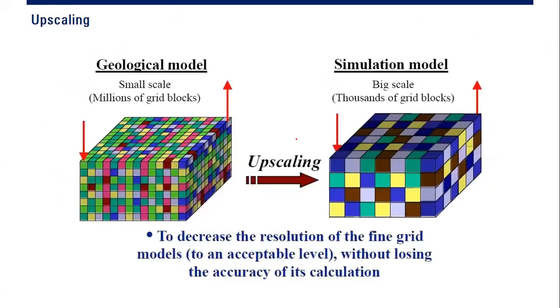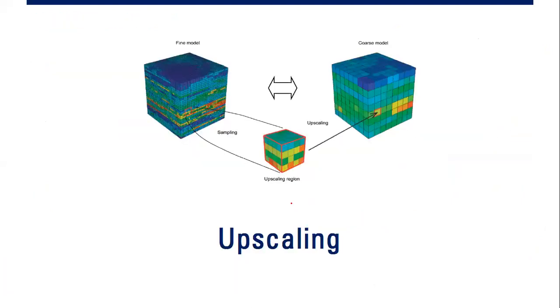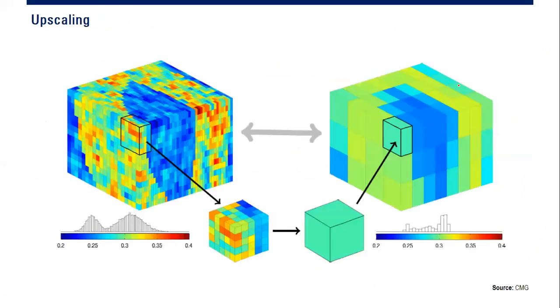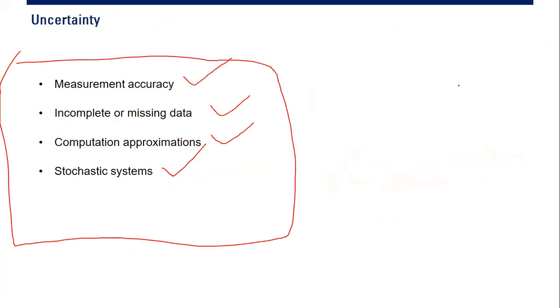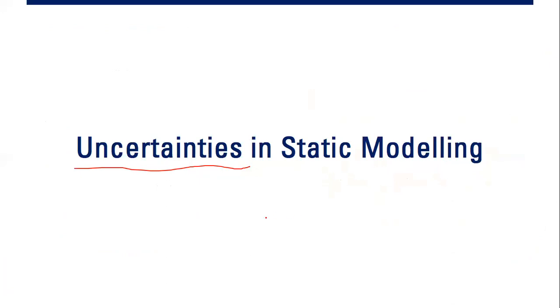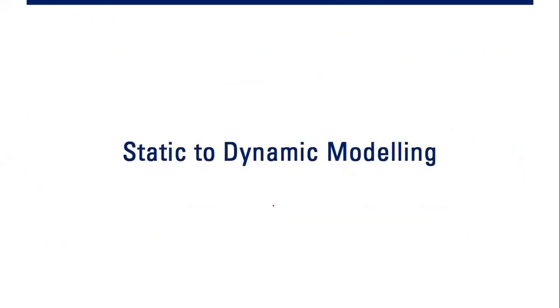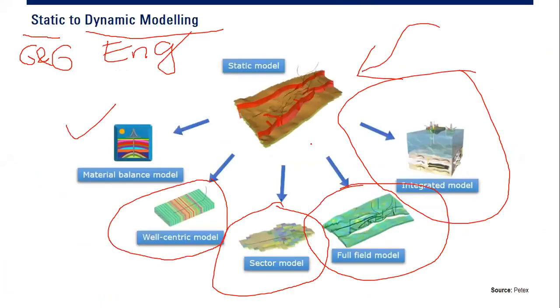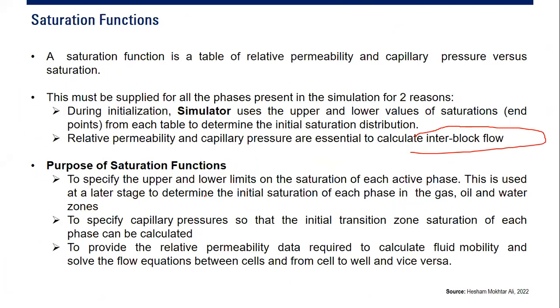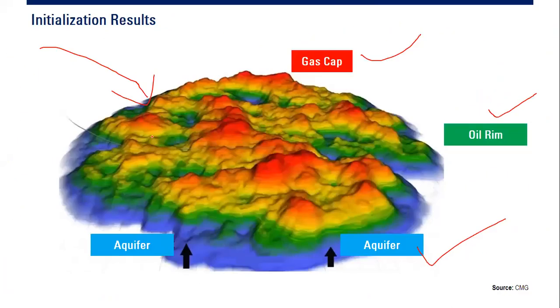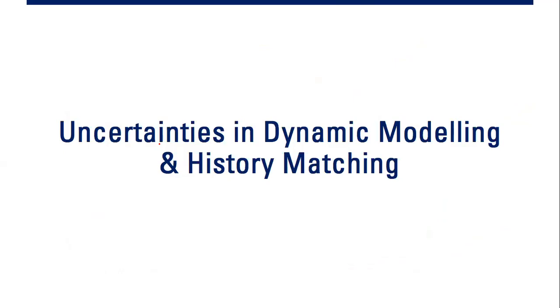To summarize the workflow: from the geological model we first perform upscaling to get a coarse model, then uncertainty analysis to get the best static model. We convert the static model to a dynamic model, then perform initialization to obtain the initial original condition of the reservoir. After that, we do uncertainty analysis in dynamic modeling and history matching.